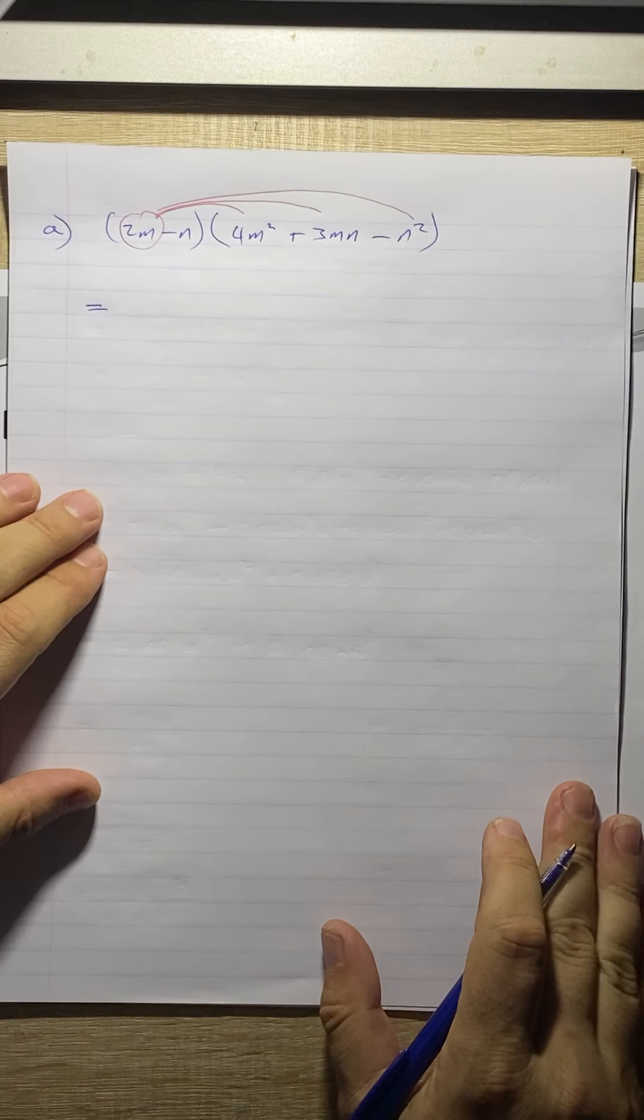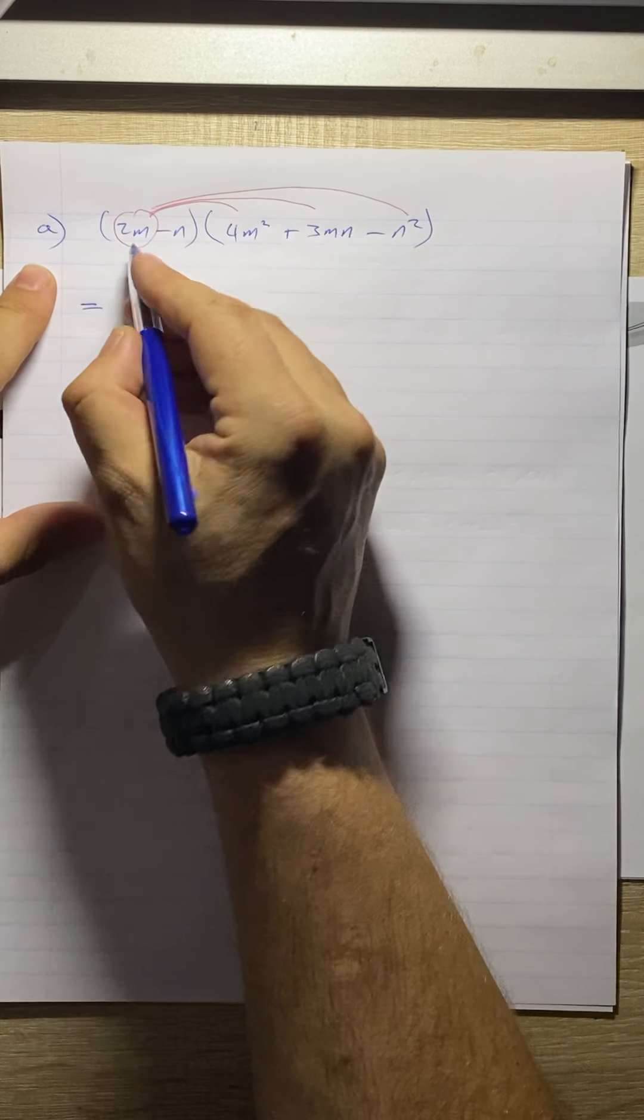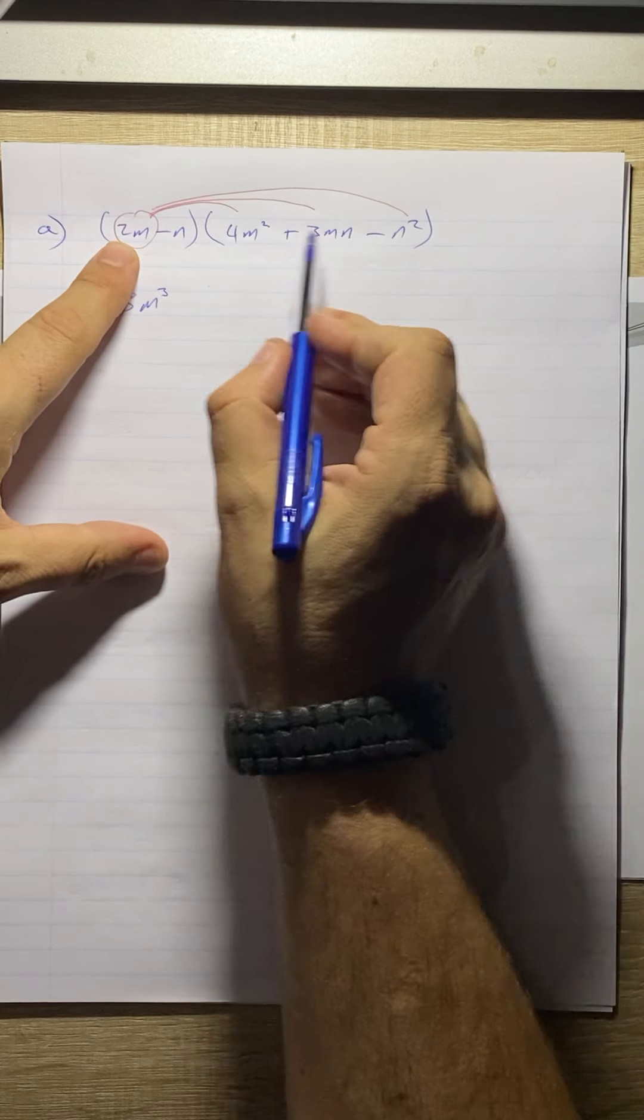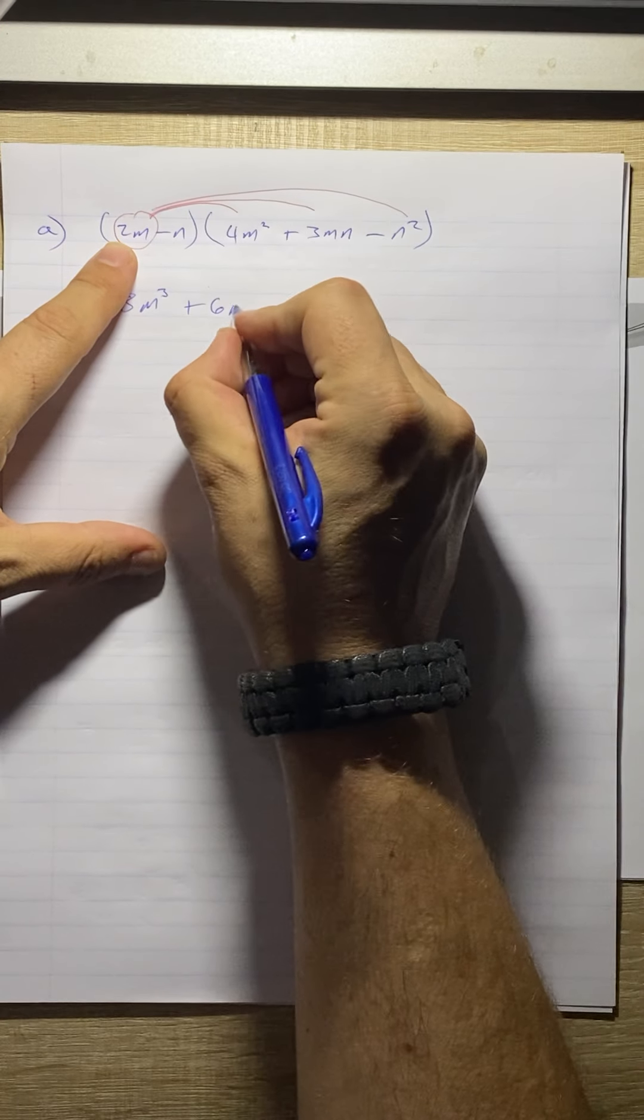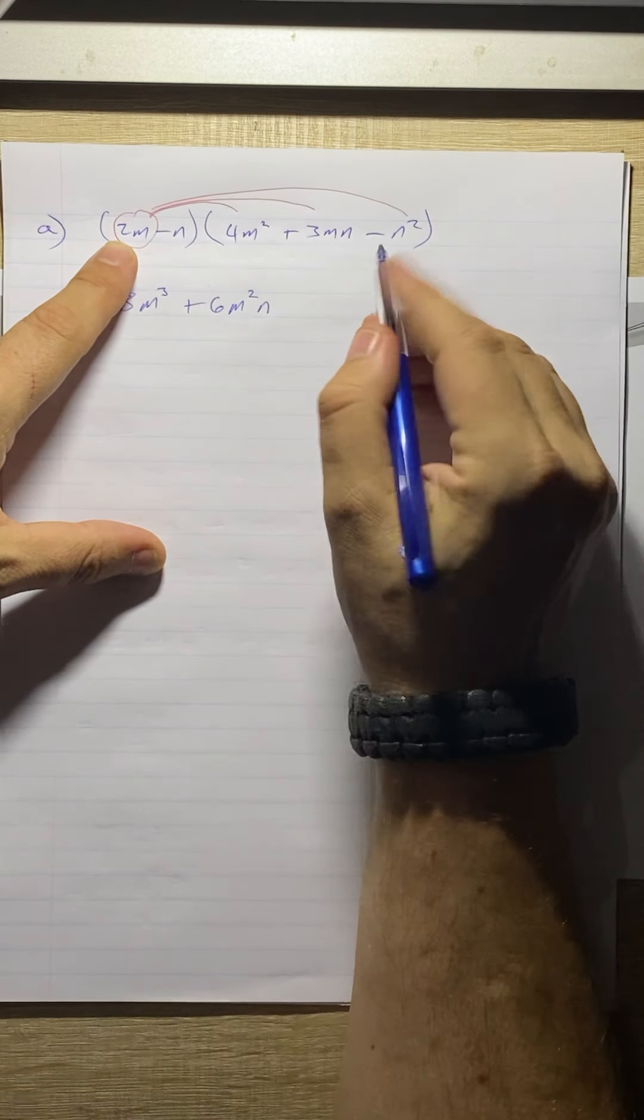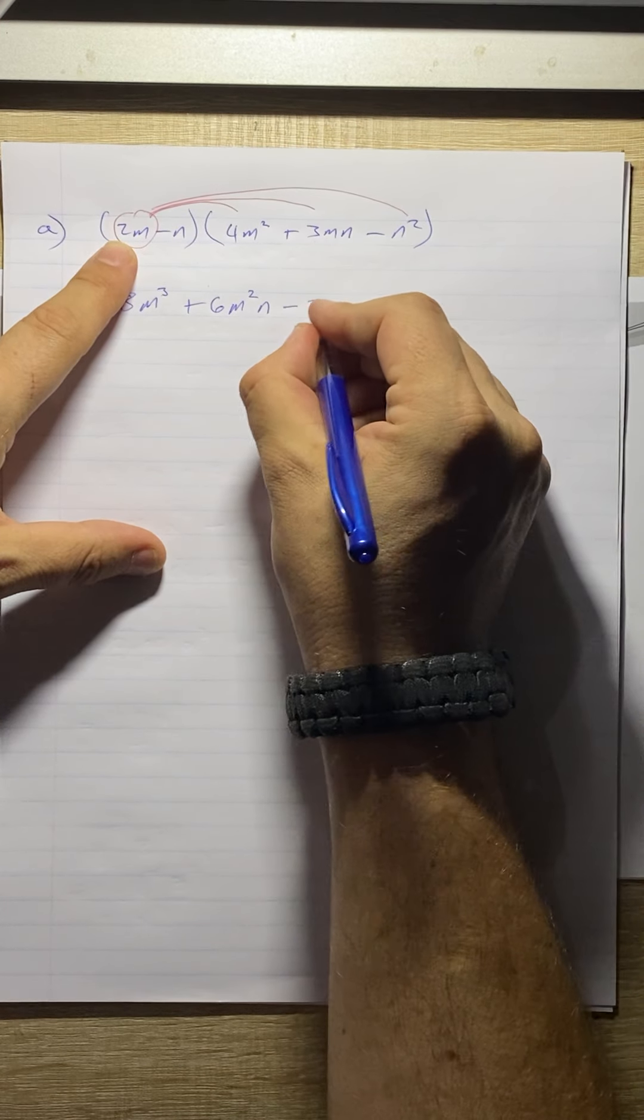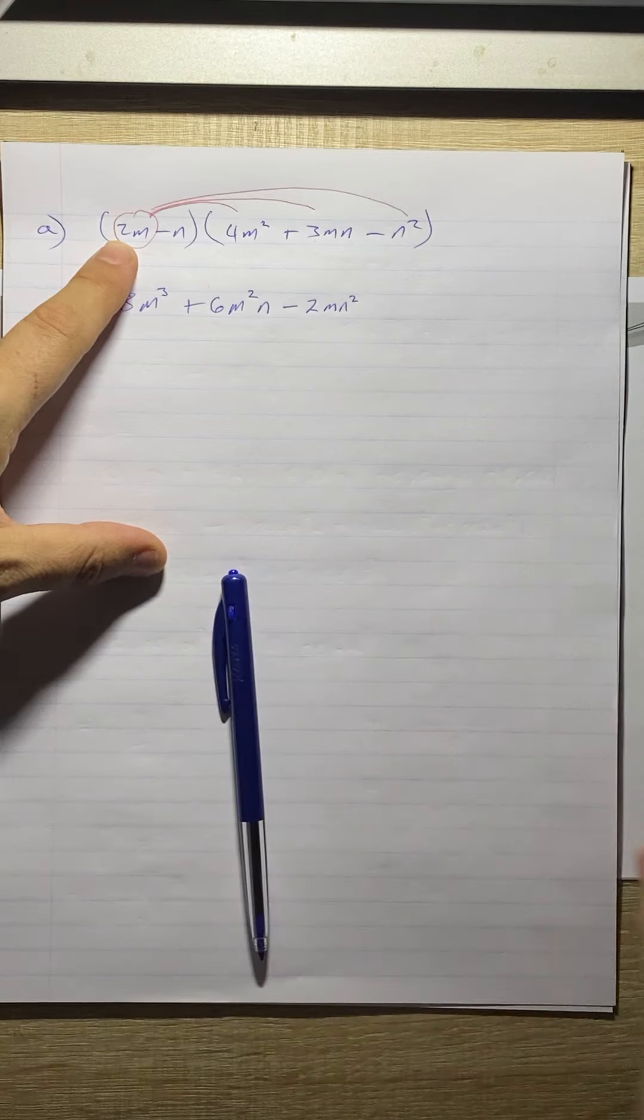So what we get is 2m times 4m squared is going to give us 8m cubed. 2m times 3mn will give us plus 6m squared n. And then if we do this last one here, we're going to get minus 2m n squared. Okay, so that's that first one.